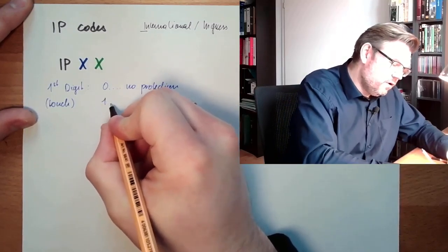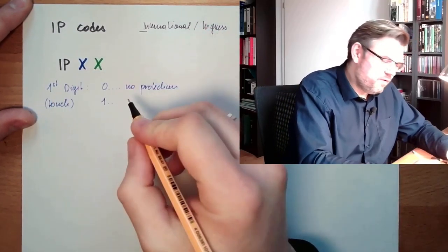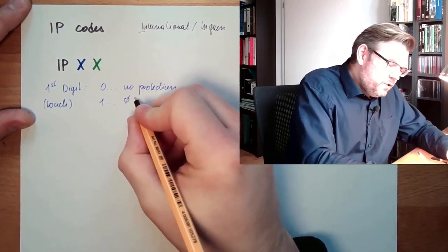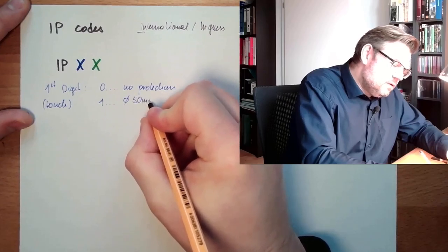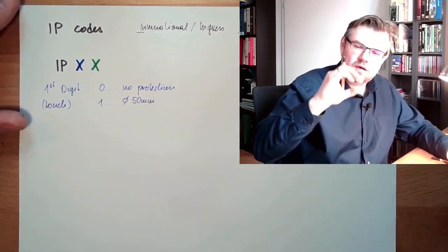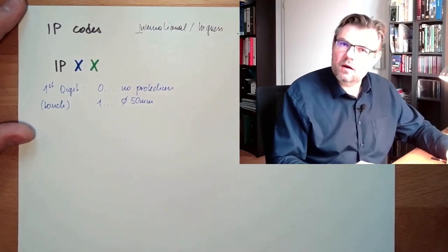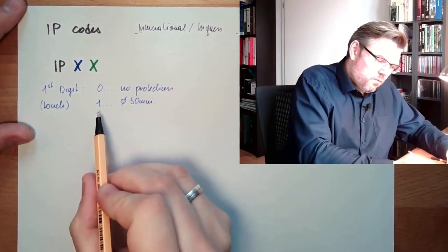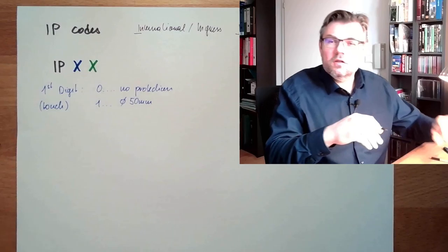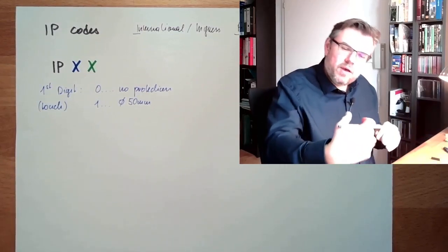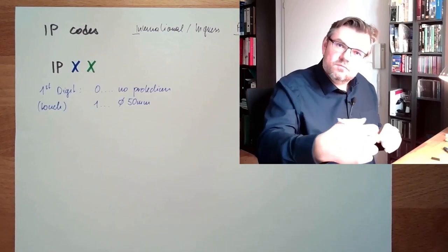If there is a one, IP one whatever, then we are protected for elements which are thicker than 50 mm. If you have something which is thicker than 50 mm, you cannot reach the electrical part. Usual thing is the back of your hand. So with the back of your hand, you're protected.